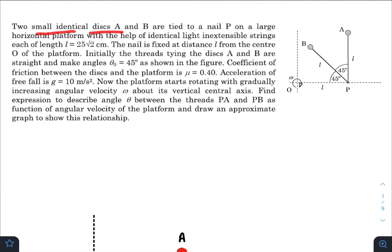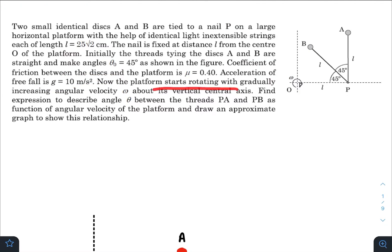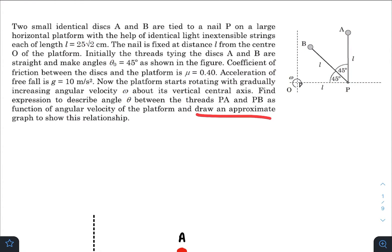Two small identical discs A and B are tied to a nail P on a large horizontal platform with the help of identical light inextensible strings of length l = 25√2. The nail is fixed at a distance l from the center O of the platform. Initially the threads tying disc A and B are straight and make θ₀ = 45° as shown in the figure. The coefficient of friction is μ, acceleration due to gravity is given. The platform starts rotating with gradually increasing angular velocity ω about its vertical central axis. Find the expression for θ between threads PA and PB as a function of ω, and draw an approximate graph.